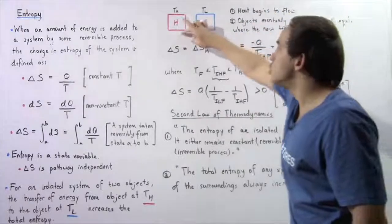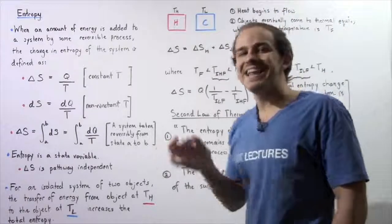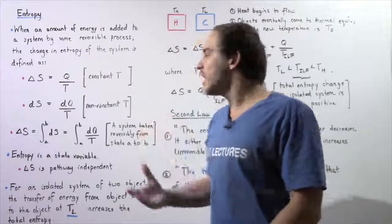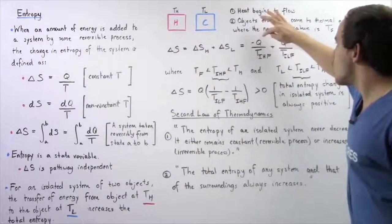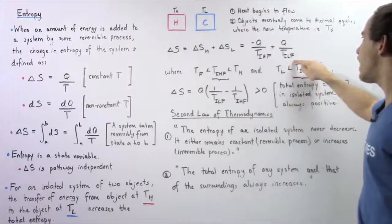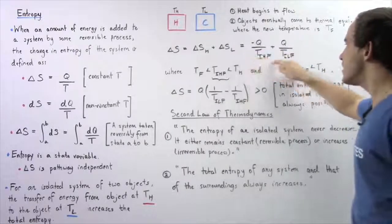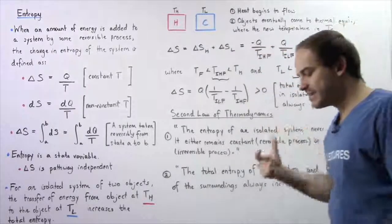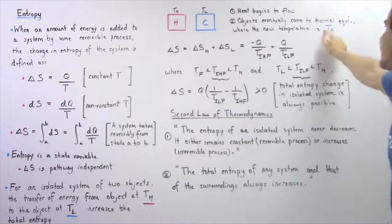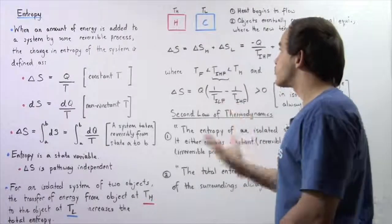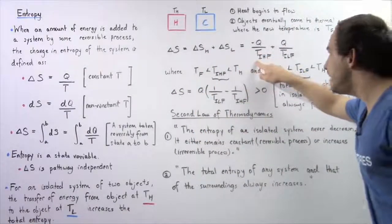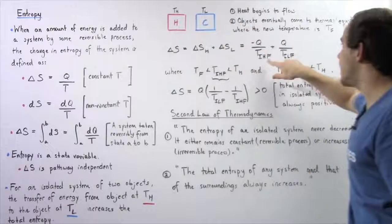This object loses energy — let's say it loses negative Q energy. That means this object must gain that same quantity of energy, because we're dealing with an isolated system. So we have negative Q divided by this temperature plus positive Q divided by this temperature. This temperature is simply the intermediate temperature between TH and the final temperature TF — the final temperature reached when the objects are brought into thermal equilibrium.